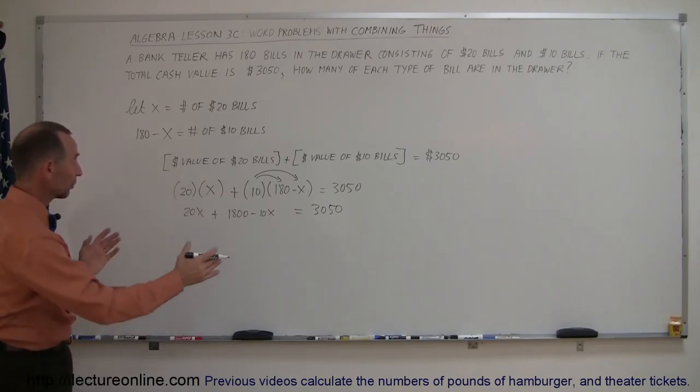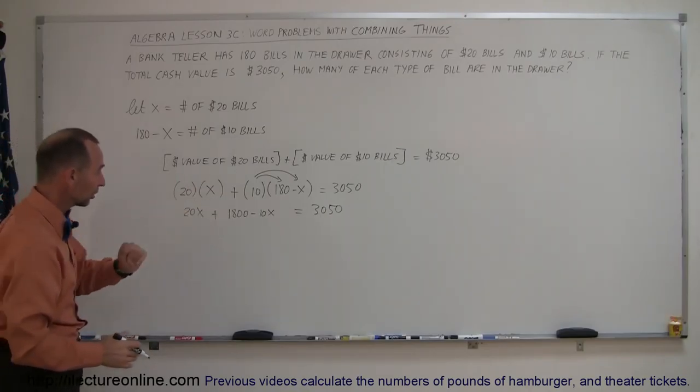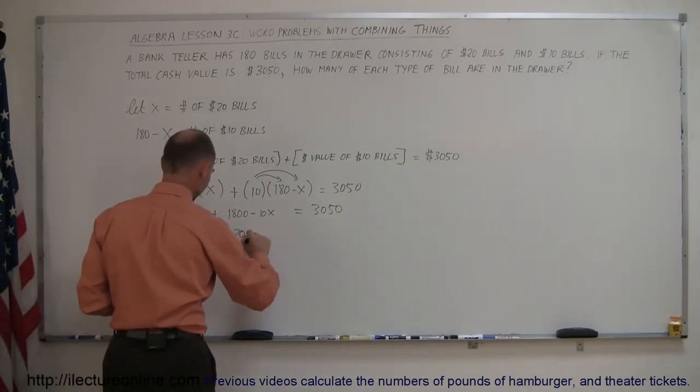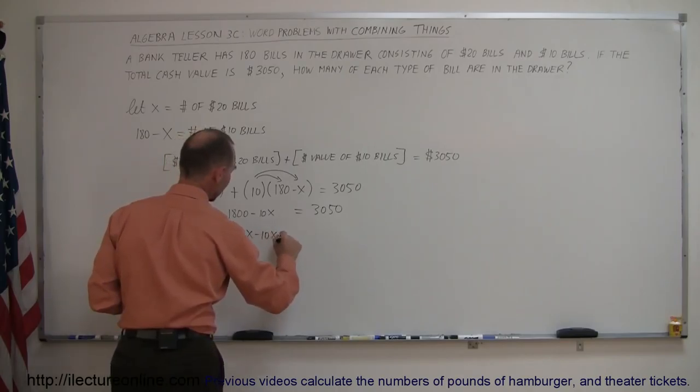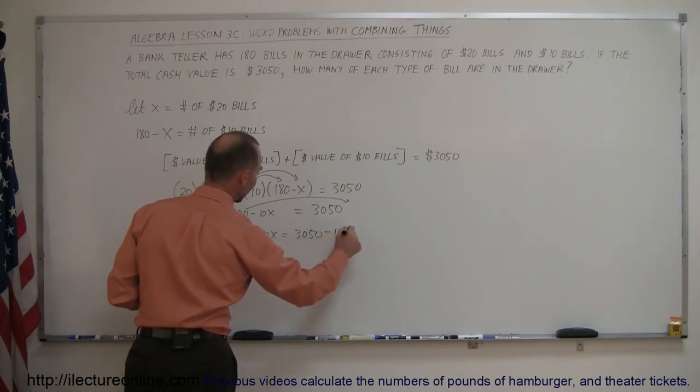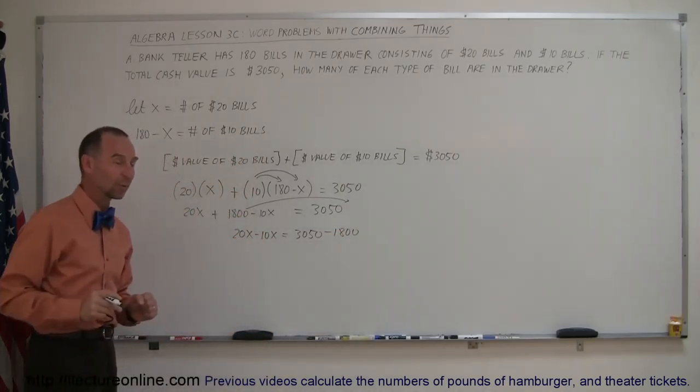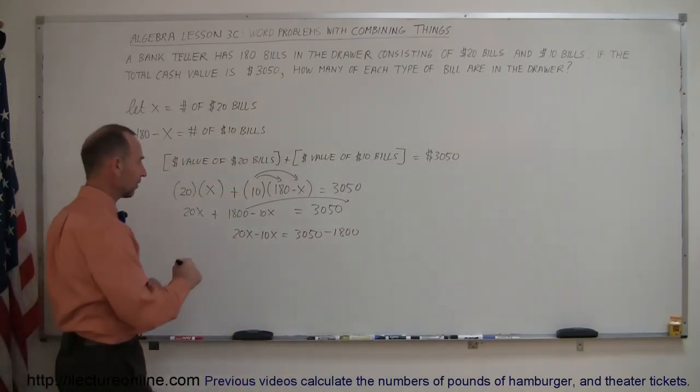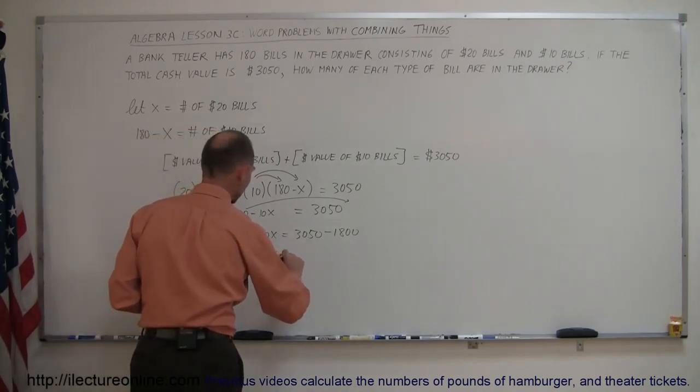Now, the next step is to move all the terms of the x to one side, all the numbers to the other side. So we have 20x minus 10x on the left side equals $3,050. And when we move the $1,800 across, minus $1,800, because the sign changes when we cross the equal sign. And so on the left side, we end up with 10x equals, on the right side, that would be $1,250.